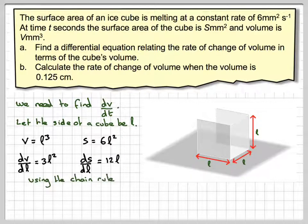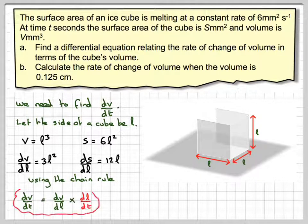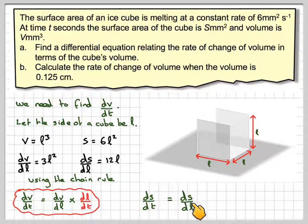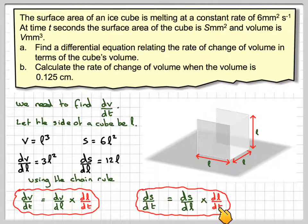Using the chain rule, dv by dt will be equal to dv by dL, and from that we would need to also find what dL/dt is. And we also know that ds/dt is equal to ds/dL, which we have here, times dL/dt.